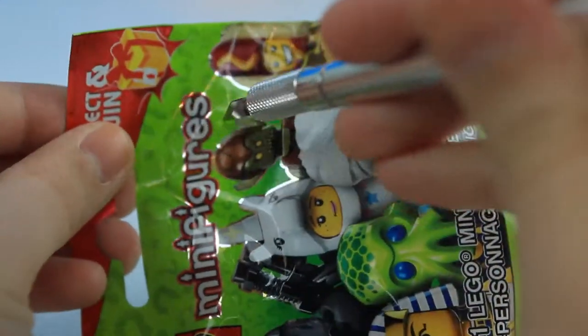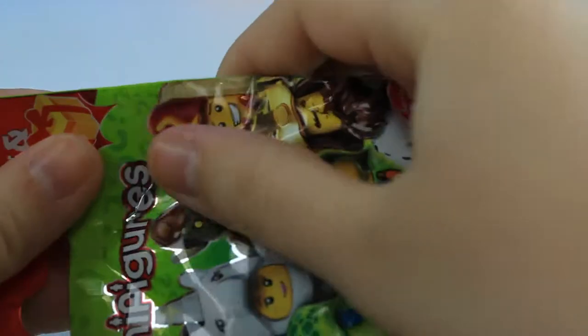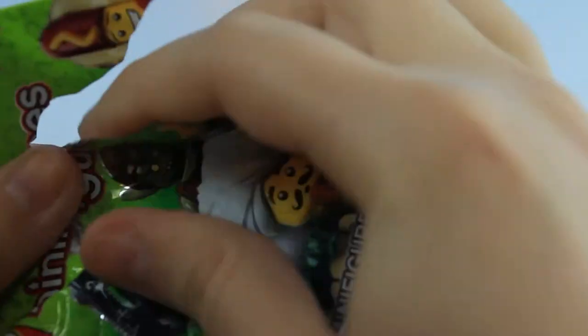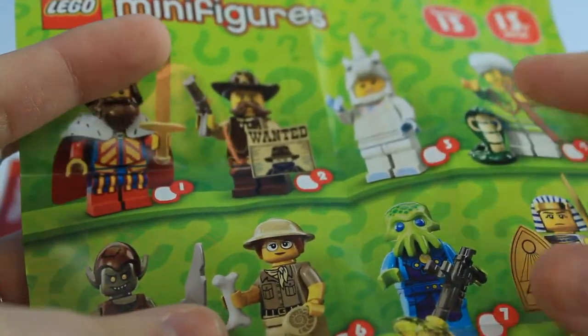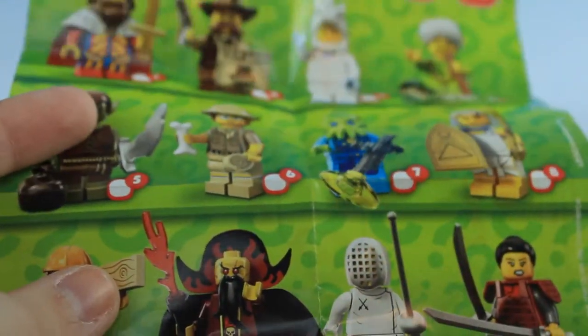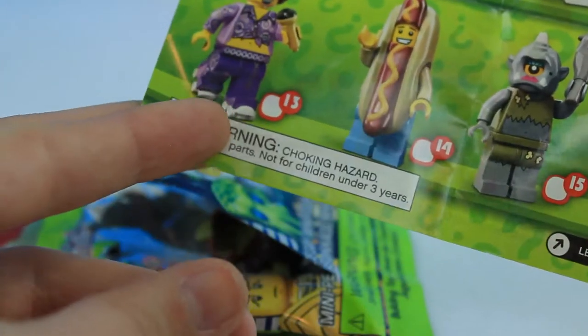I need scissors. Or I guess my X-Acto knife will work just fine. Let's get this open. The hot dog guy kind of looks funny. So this is our list of the ones we can get. That guy looks pretty cool. So let's see what one we got.